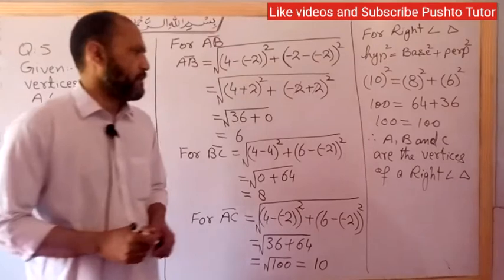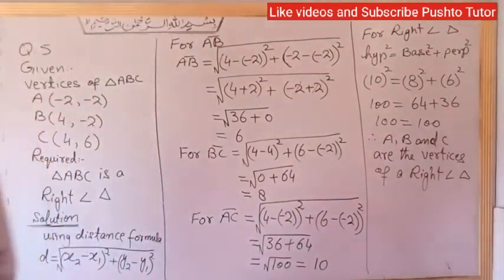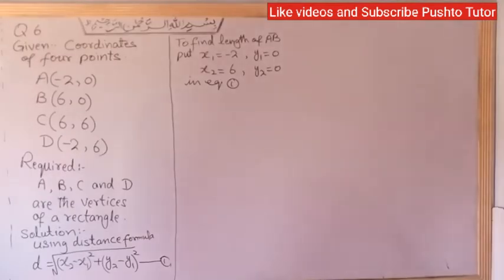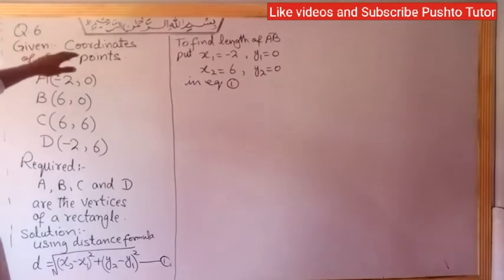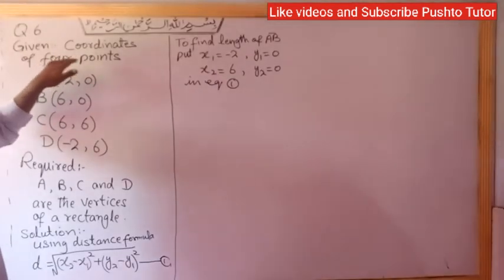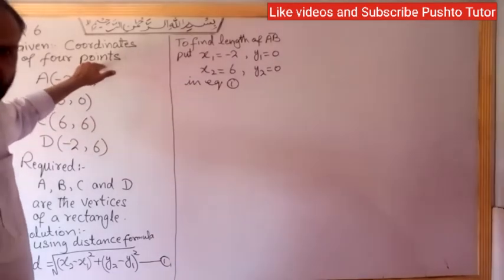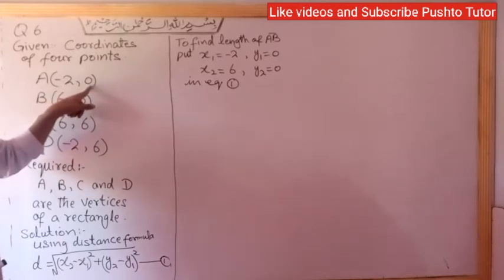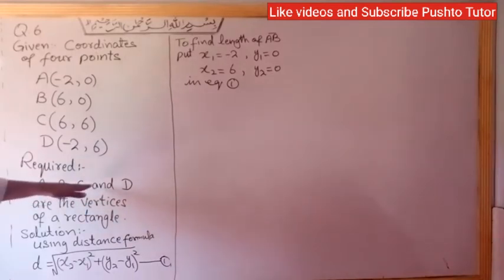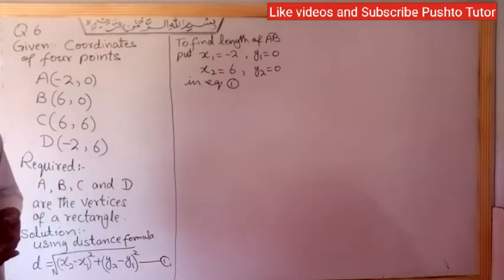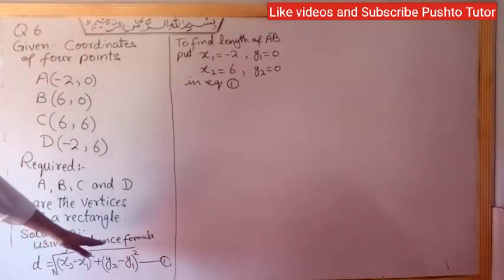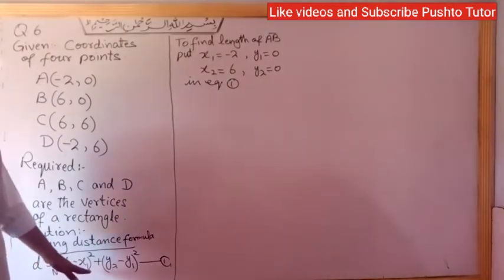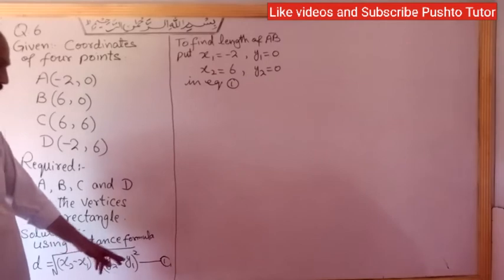Now question number 6. Given: coordinates of four points A, B, C, D. Required: prove that A, B, C, and D are the vertices of a rectangle. Solution: using the distance formula d = √((x2 - x1)² + (y2 - y1)²). Let this be equation 1.